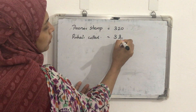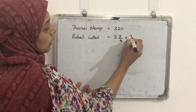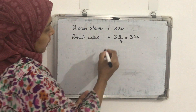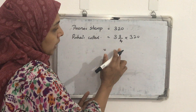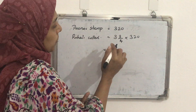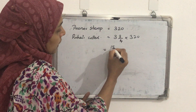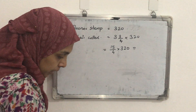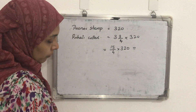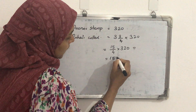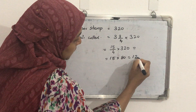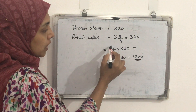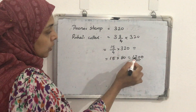Rohan's stamp collection = 3¾ × 320. Converting 3¾ to an improper fraction: 3 × 4 = 12, 12 + 3 = 15, so it becomes 15/4 × 320. By simplification, 320 ÷ 4 = 80, so we get 15 × 80 = 1200 stamps. Rohan has 1200 stamps.